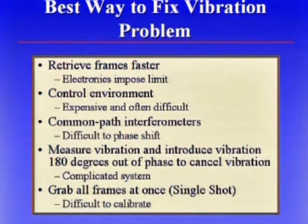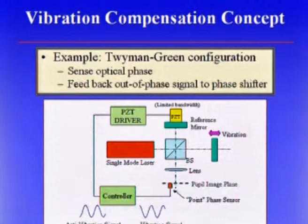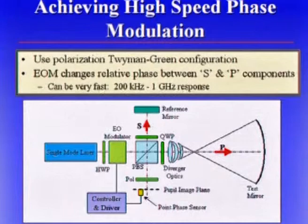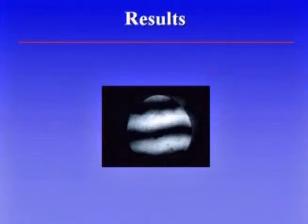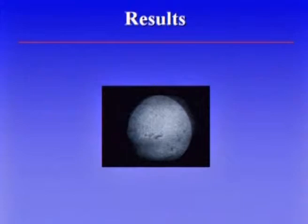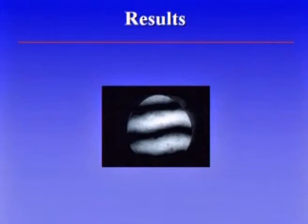One approach is to sense the vibration — sense the optical phase of the fringe pattern as it's jumping around — then feed back a signal that introduces vibration 180 degrees out of phase. We recently built one of these systems and it worked pretty well. With the feedback system on, the fringes were fairly stationary; with it off, they jumped all around and you can't see them. It does a pretty good job of canceling out vibration, but it's rather complicated and expensive — a nice academic exercise, I would say.